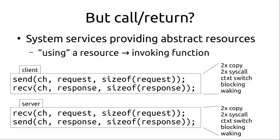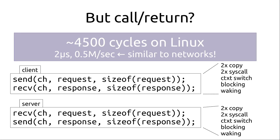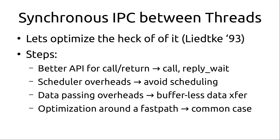Looking at the overheads for this client-server pattern: the client needs send and receive — two system calls, two copies. The server needs receive and send — two more system calls. That's four system calls total, plus a context switch, client blocking and waking, and mirrored operations on the server side. On Linux this adds up to about 4,500 cycles, around two microseconds, meaning about half a million of these operations per second. That's actually on the same order of magnitude as modern network latency, which is around five microseconds — which doesn't feel right for local IPC.